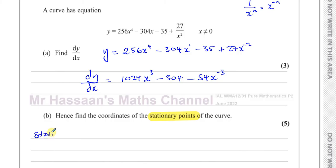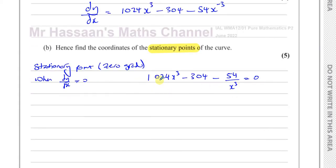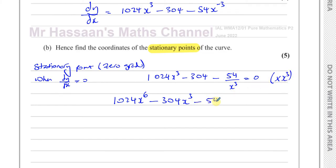The stationary points occur when dy/dx equals 0. So I set 1024x cubed minus 304 minus 54 over x cubed equal to 0. To eliminate the x in the denominator, I multiply everything through by x cubed. That gives me 1024x to the power of 6, minus 304x cubed, minus 54 equals 0.